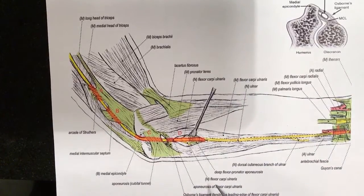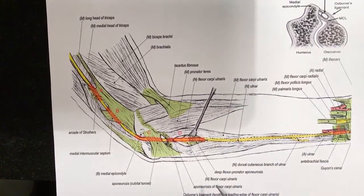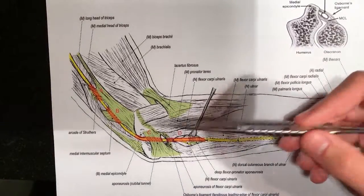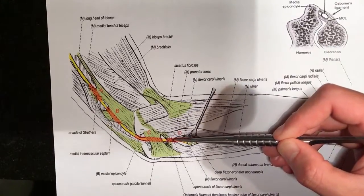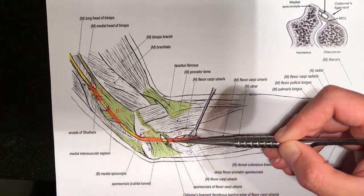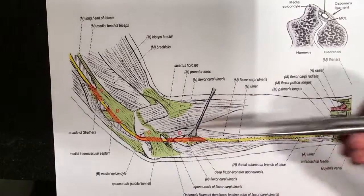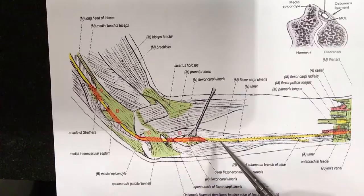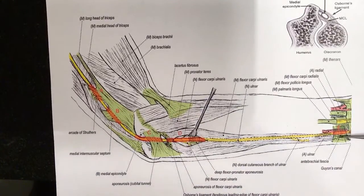Continuing down, the cubital tunnel passes under the flexor carpi ulnaris. There are two heads of the FCU muscle with a fascia spanning between them. This fascia can cause compression where the ulnar nerve passes right in between those two heads. Additionally, as the nerve travels further distally, it is protected by the antebrachial fascia, which is simply the fascia of the forearm.